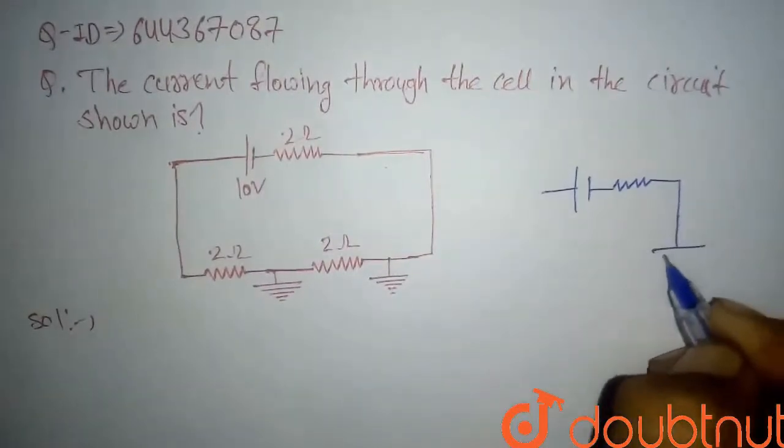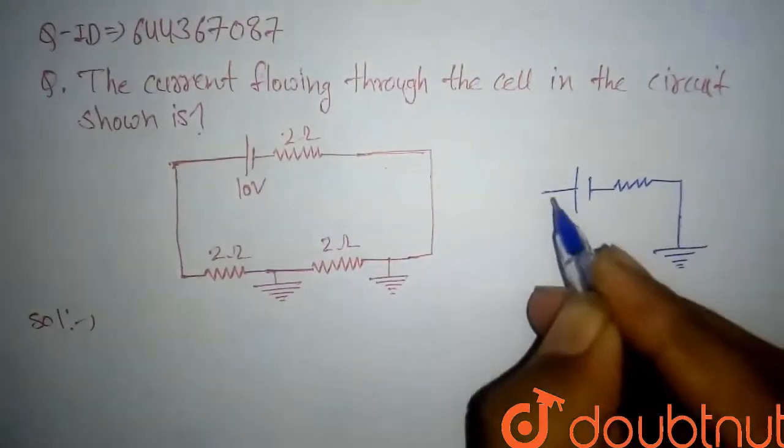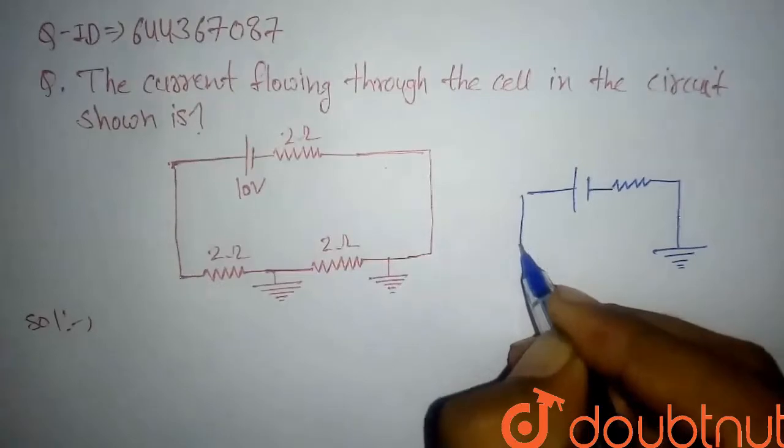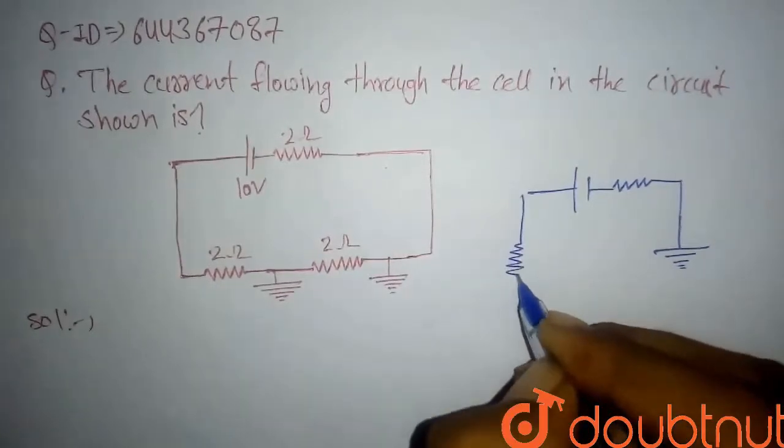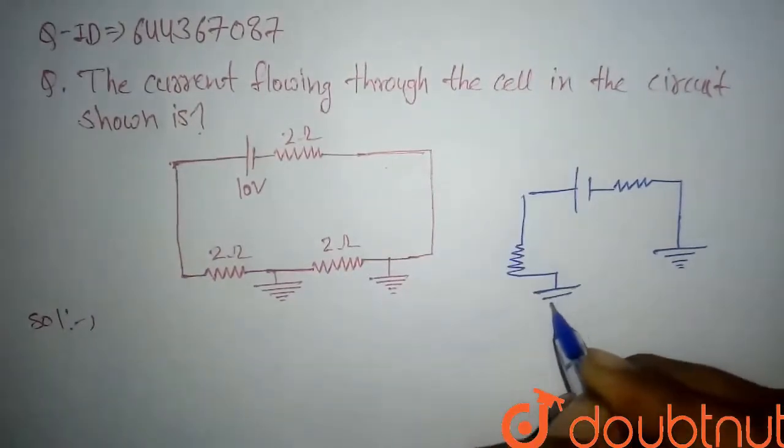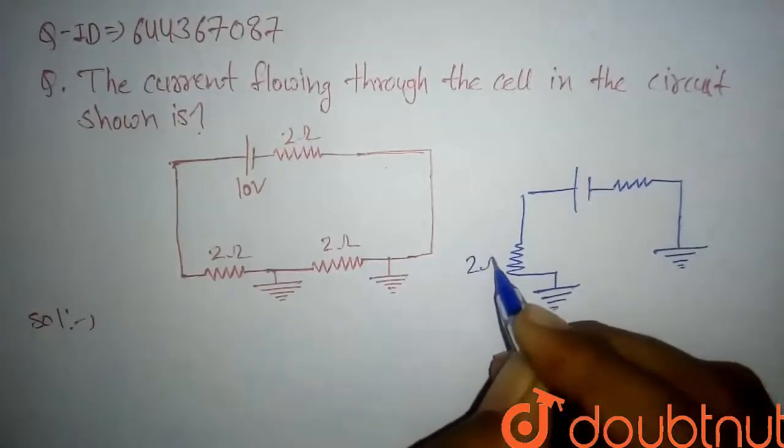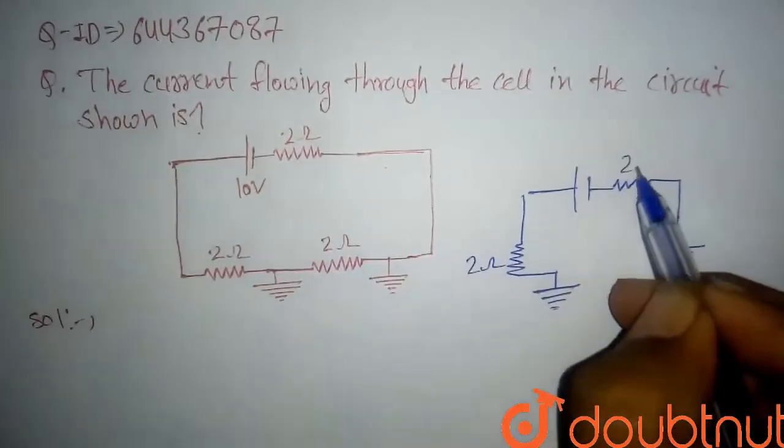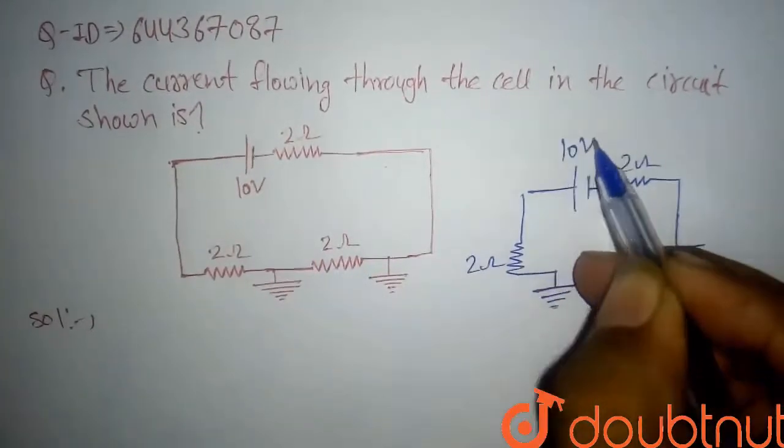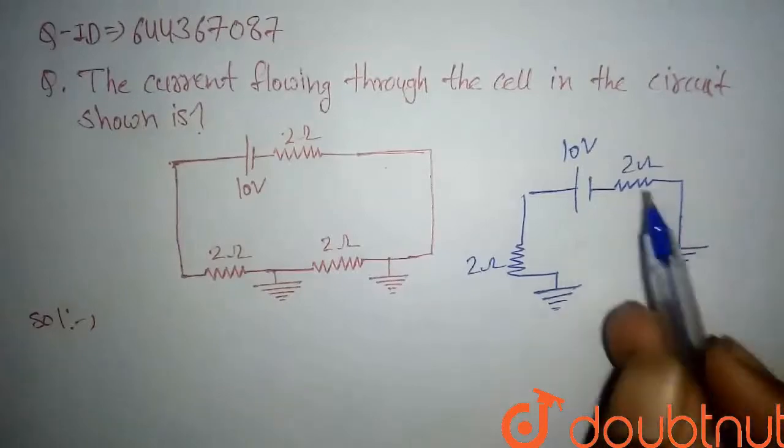We are redrawing just so we will see... here... this 2-ohm resistor, which is this, and this 2-ohm resistor, and 10-volt battery. So here, this is the complete circuit because there is no current in the 2-ohm resistor.